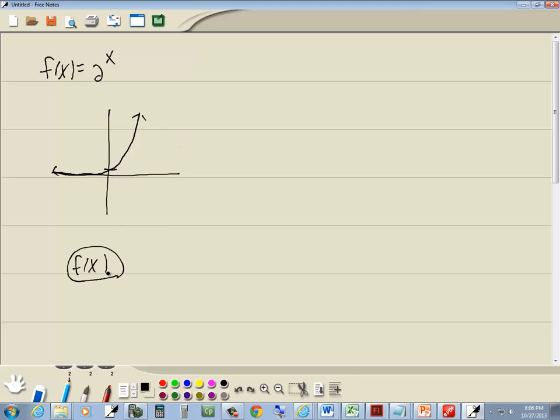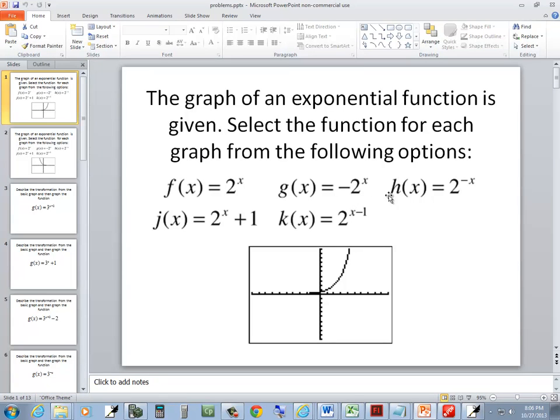Now, if it wasn't that one, what we'd do is we'd look at these negatives and numbers, what they do. Remember, if you have a negative out in front, it flips it across the x-axis, so it's flipped upside down. It reflects it across the x-axis. If the negative is inside with the x, then it flips it, reflects it across the y-axis.